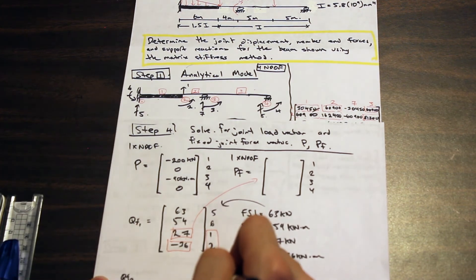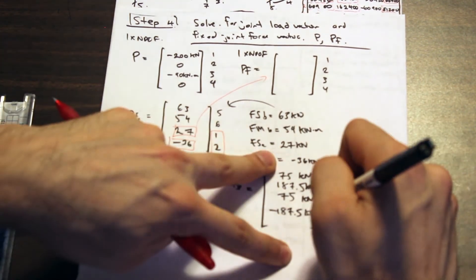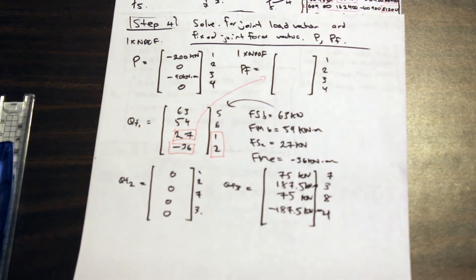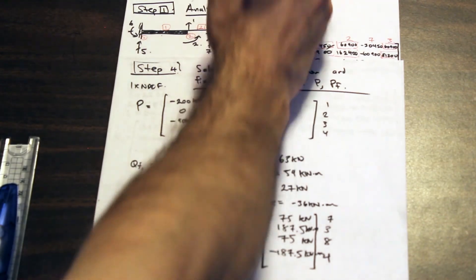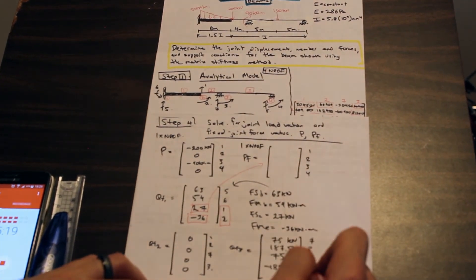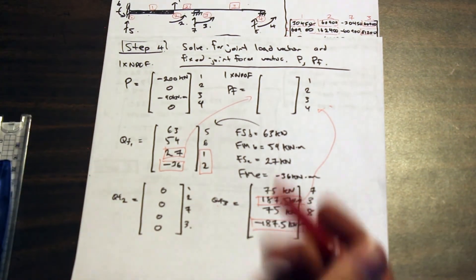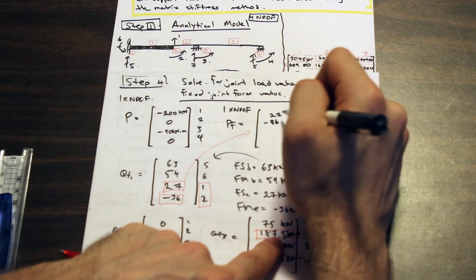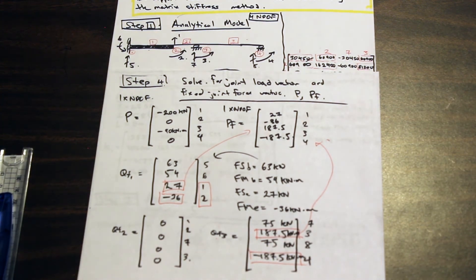For member two, the fixed end moments are zero because there are no external forces acting within that member. For member three, we have a 150 kN point load at midspan, which generates fixed end moments. The relevant code numbers are three and four, so those entries transfer into PF. The values are 187.5 and 187.5 kN·m — one for code three, one for code four. That completes the fixed joint force vector PF.